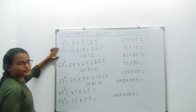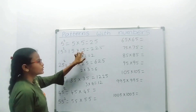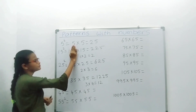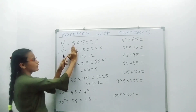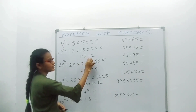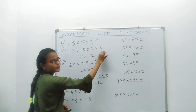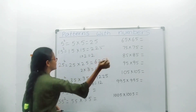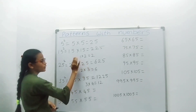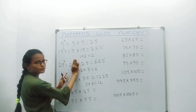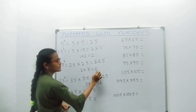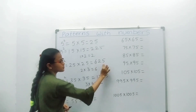15 squared: 15 into 15 equals 225. How does it come? Close the number 5; we have 1. The next number after 1 is 2. 1 into 2 equals 2. Write down 25 — so the answer is 225. 25 squared: 25 into 25 equals 625. Close the number 5; we have 2. The next number after 2 is 3. 2 into 3 equals 6. Write down 25 — answer is 625.